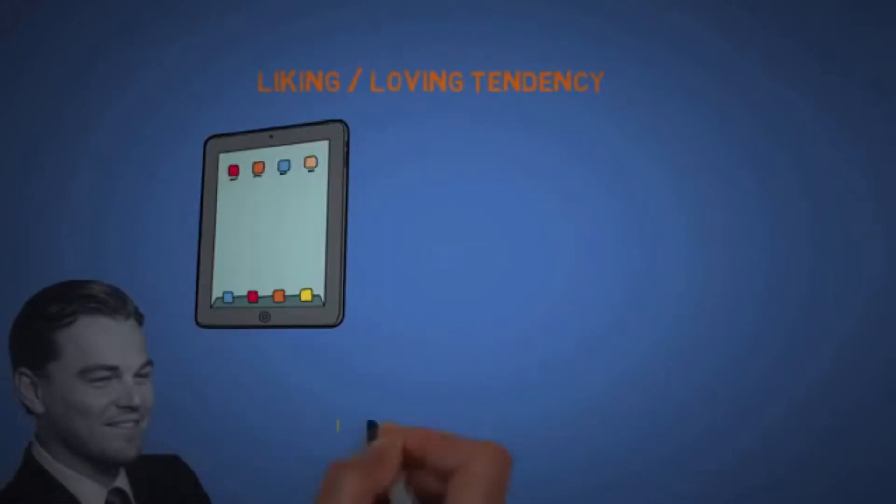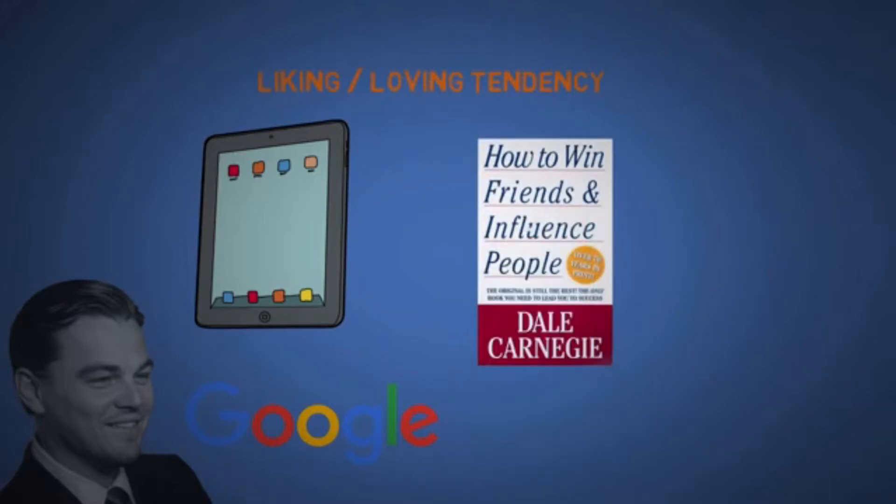The second is liking slash loving tendency. We tend to ignore the faults of other people, products, or companies that we admire. One of my favorite books on this subject is How to Win Friends and Influence People by Dale Carnegie. But in general, just be nice, look sexy, and people will be hypnotized by you.